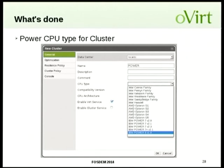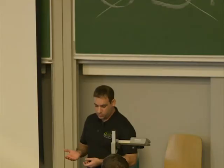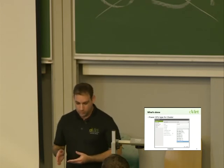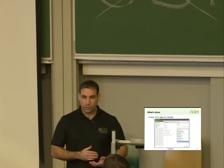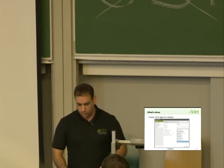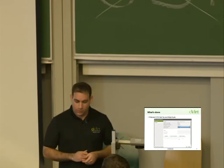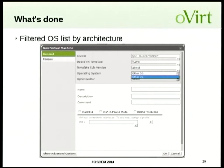Here's how it looks in the UI. This is the new cluster dialog, and you can see the new supported CPUs — the IBM Power family. Once the user selects a specific CPU, the architecture is automatically set from the CPU, since every CPU has an associated architecture. In the new virtual machine dialog, when the cluster is a PPC cluster, the operating system list is filtered to show only supported OSes — currently just 'other OS,' but this list will grow as more VM OSes are verified.